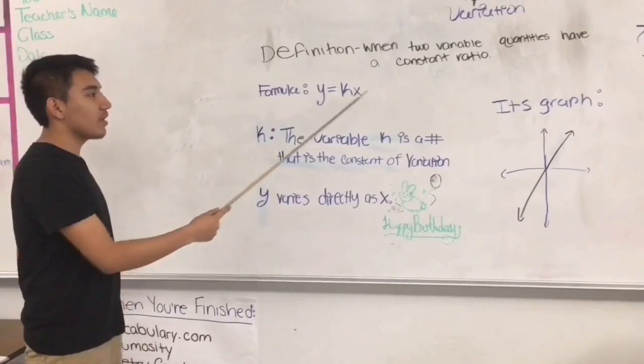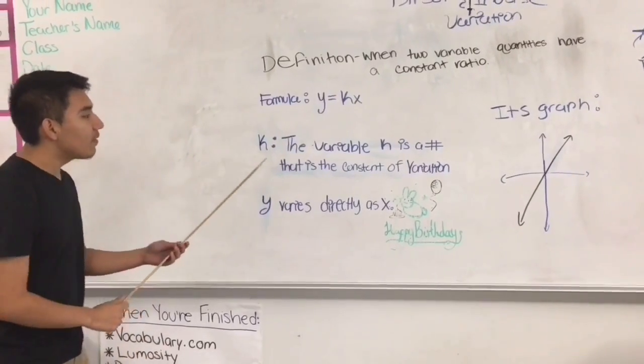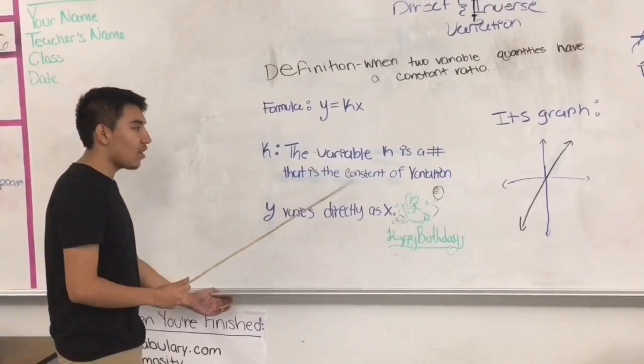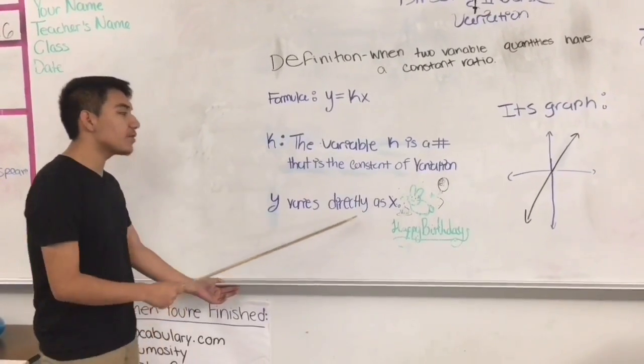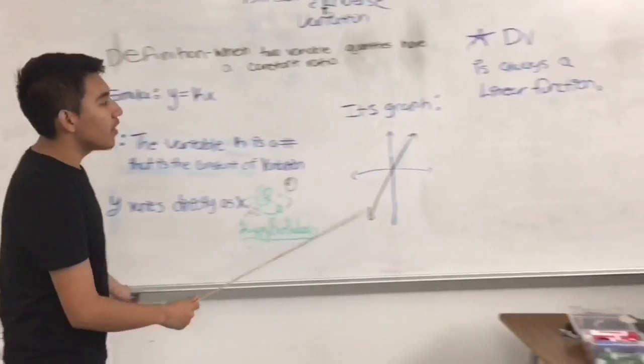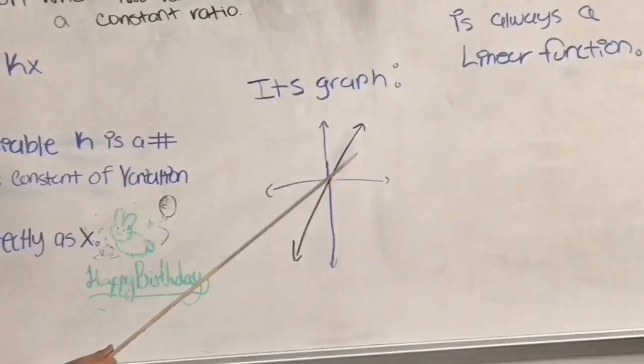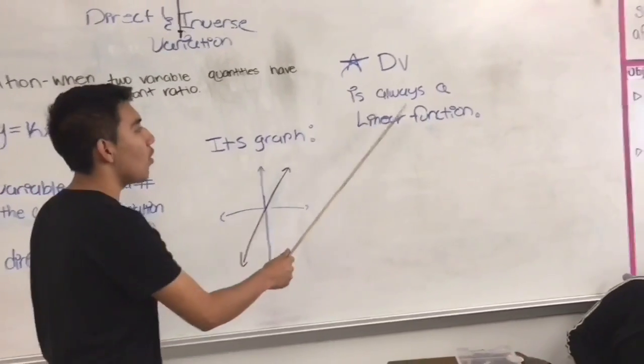The formula is y equals kx. The variable k is a number that is a constant of variation. y varies directly as x. So here's the graph of the direct variation. And remember that direct variation is always a linear function.